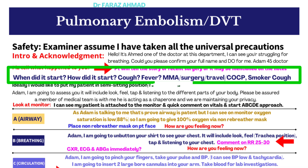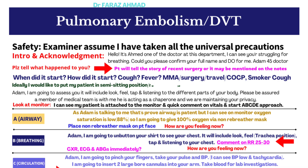Tell the examiner: 'I would like to place my patient in a semi-sitting position because the patient is short of breath.' Then say to the patient: 'I am going to assess you — it will include look, feel, tap, and listen to different parts of your body. The examiner is acting as chaperone and we will maintain your privacy. May I proceed?'